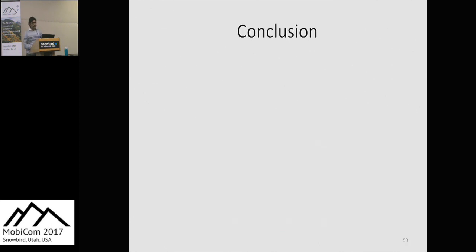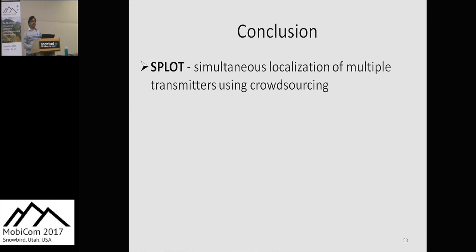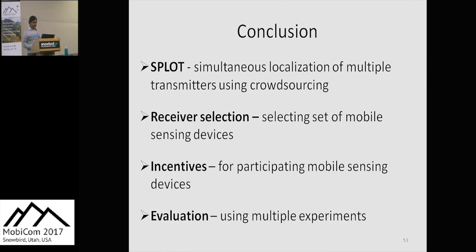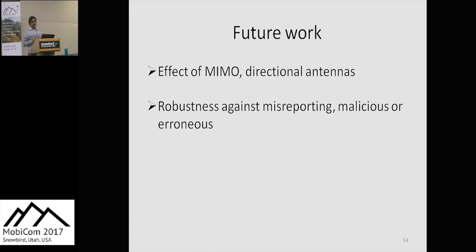To conclude, we came up with SPLOT, an efficient algorithm for localizing an unknown number of simultaneously active transmitters, along with a receiver selection and incentive mechanism for selecting and incentivizing nodes based on their contribution. We evaluated our framework using various experiments. This work can be extended in two important directions: studying the effect of multiple antennas on crowdsourcing devices, and making the algorithm robust against misreporting, since right now receivers can send false data and there is no way to prevent that.